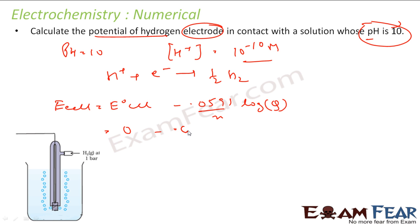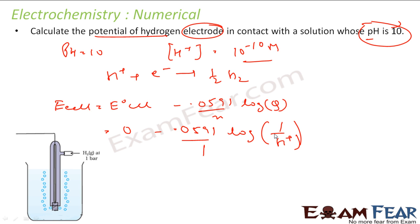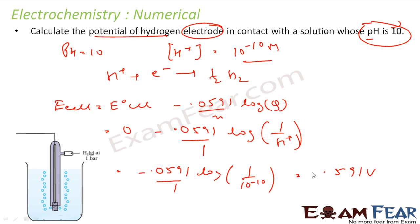With n = 1 and Q = [H₂]^½ / [H⁺] = 1 / [H⁺] (at standard H₂ pressure), E_cell = 0 − (0.059/1) × log(10⁻¹⁰) = −0.059 × (−10) = ... solving this gives −0.591 V as the final answer.